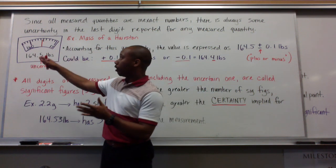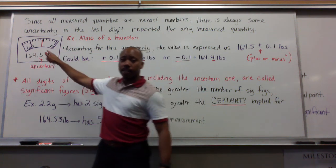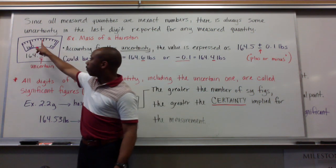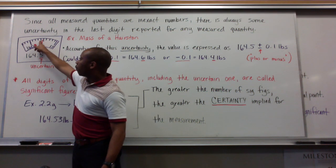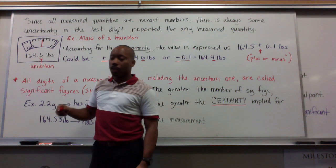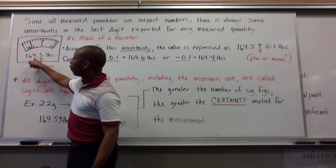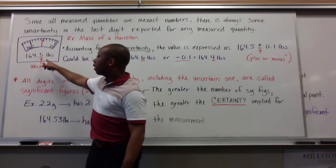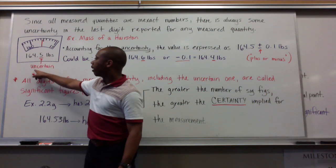Because to say I'm simply 164 pounds is not accurate. Clearly, it's in between the 4 and the 5 of this 160 category. So, I have to approximate that I'm 164.5 pounds. That last digit, that 5 there, is uncertain.